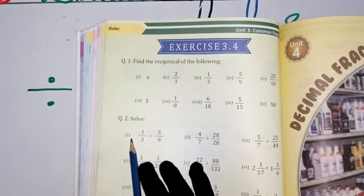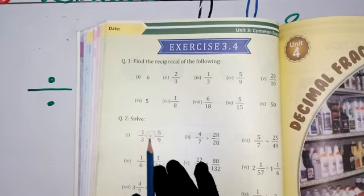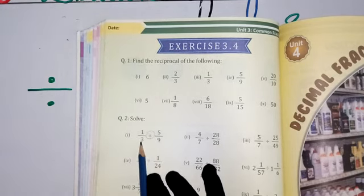Question number 2. Solve. First part: 1 by 3. This is the sign of division. 5 by 9. 1 by 3 divided by 5 by 9.